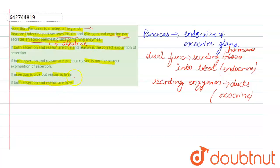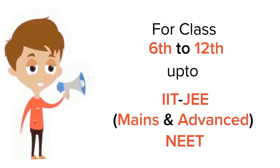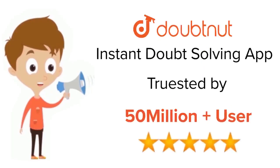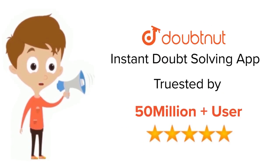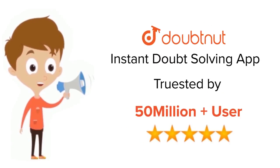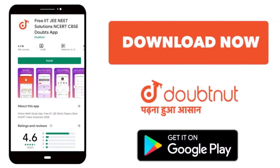So the correct option is Option C — assertion is true but the reason is false. I hope my answer is clear to you. Thank you. For class 6 to 12, IIT and NEET level, trusted by more than 5 crore students — download Doubtnit app today.